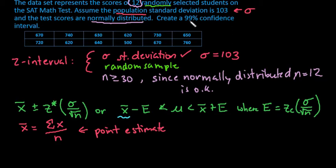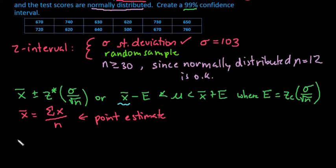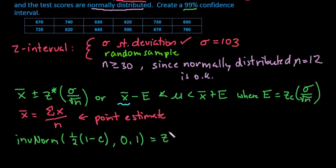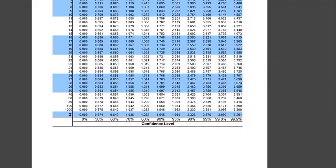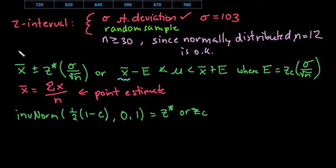Since it says a 99% confidence interval, if you need to find the 99% confidence interval, remember you can either do inverse norm of one half times one minus your level of confidence as a decimal, 0.01, to get your z-critical. Or you can use the table value. So 99% is 2.576. That's what we would plug into our calculator if we were doing hand calculations.